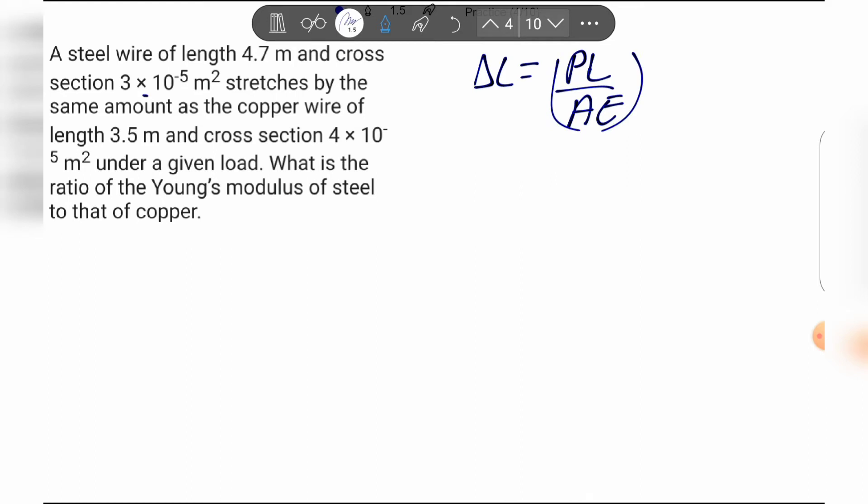The question states: a steel wire of length 4.7 meters and cross section of 3×10^-5 m² stretches by the same amount as copper wire of length 3.5 meters and cross section area of 4×10^-5 m² under a given load. What is the ratio of Young's modulus of steel to copper?